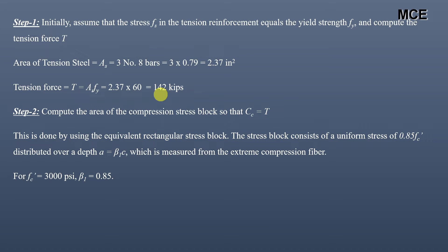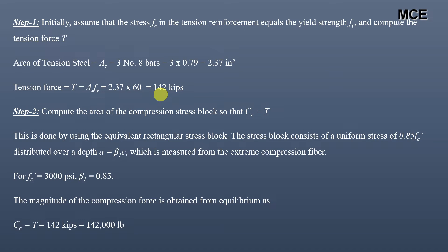For 3000 psi concrete, the value of β₁ is equal to 0.85. From equilibrium, the compression force equals the tension force, so the compression force is also 142 kips, or 142,000 lbs.